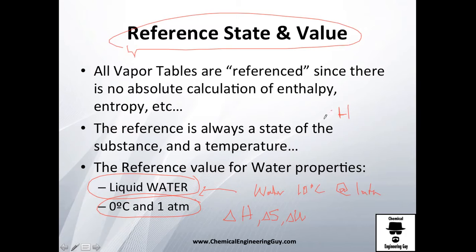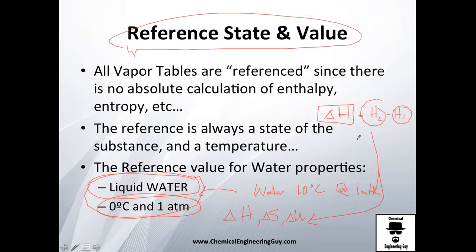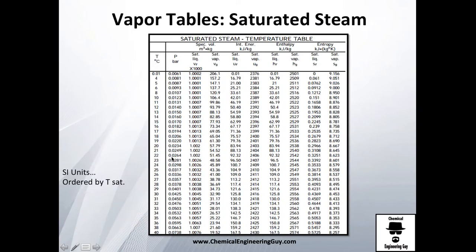To get the enthalpy change: ΔH = H₂ − H₁, where H₁ is your reference value and H₂ is your final value from the table data. This allows you to calculate the change in enthalpy. Just be aware that if someone chooses a different reference — say, atmospheric pressure and 25°C liquid water — you will have a 25°C difference, so always be sure to apply the correct reference value.